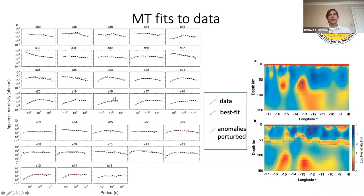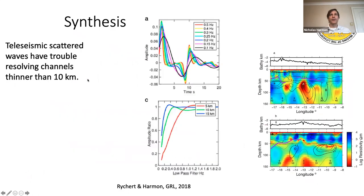This is just showing the robustness — input and output tests for the magnetotellurics. If we reduce or perturb these different anomalies, we get a much worse fit to the data, particularly for certain stations. The best fit is the black line and the perturbed model is the red line, suggesting you do a worse job fitting the data when you change those anomalies.